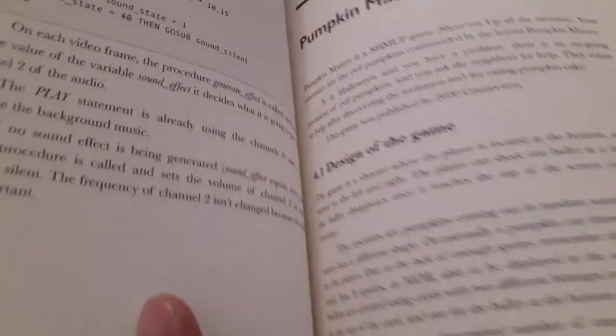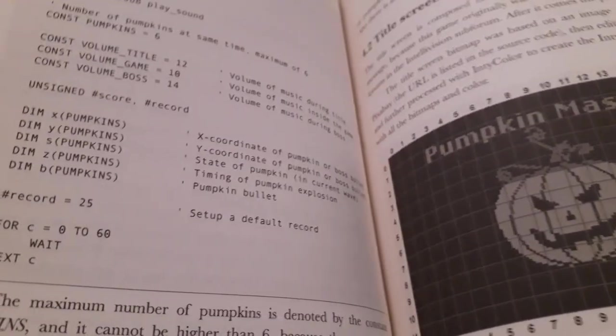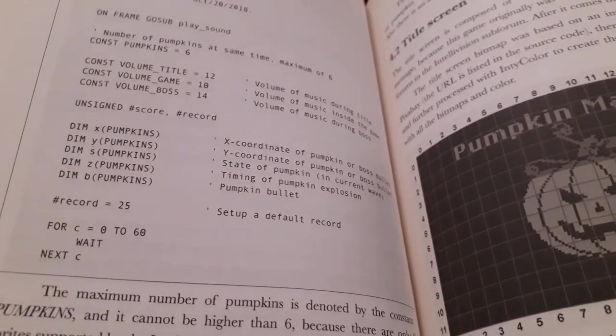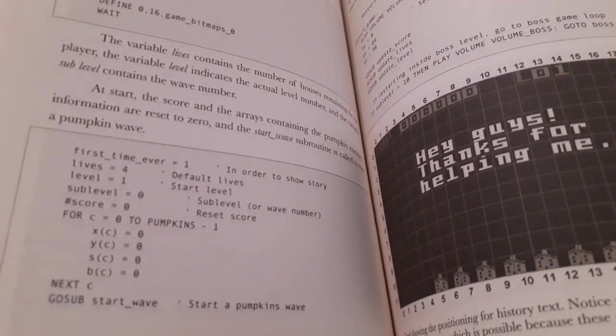Pumpkin Master as Ashmoop, published by 2600 Connection. How to create the title screen, the title screen complete. The history of the game.